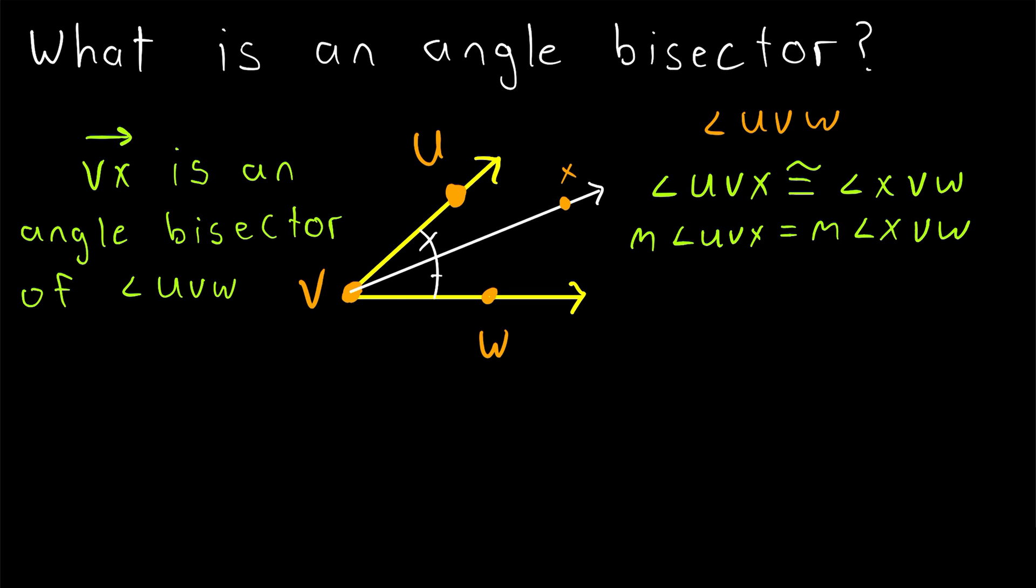So if, for example, we have this angle UVW, and VX is an angle bisector of UVW, and suppose we know that angle UVX has a measure of, let's say, 2X plus 3. We could be picky and say that's 2X plus 3 degrees, but let's just leave the unit of degrees off so it looks a little cleaner.